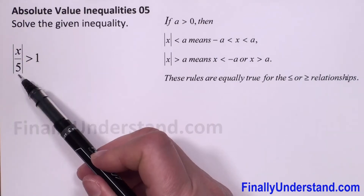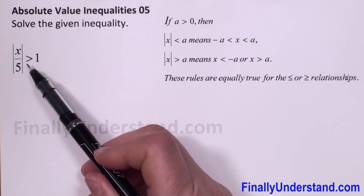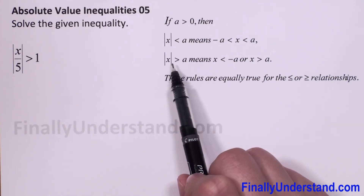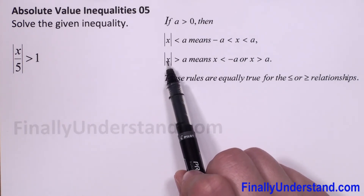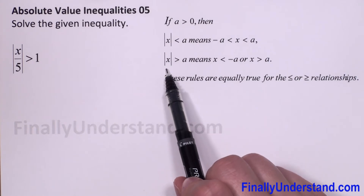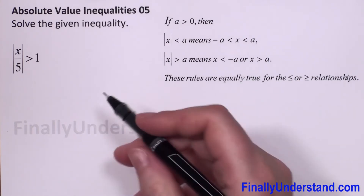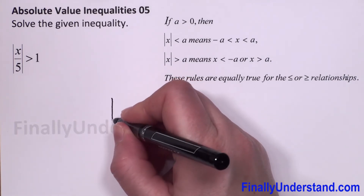Let's look at our inequality. We have the absolute value of x over 5 is greater than 1. The greater than sign means we have to use the second rule. So we will split our absolute value bars into two inequalities.